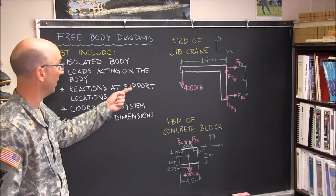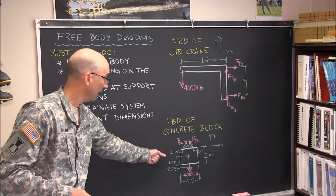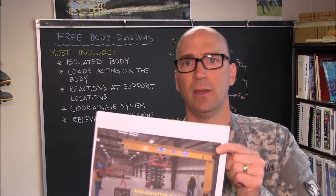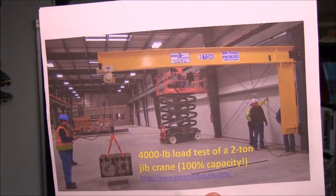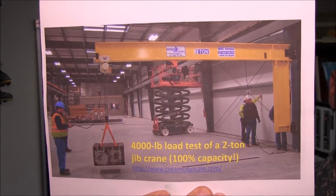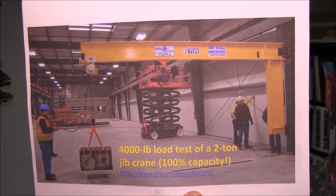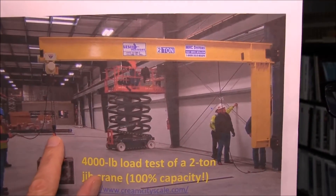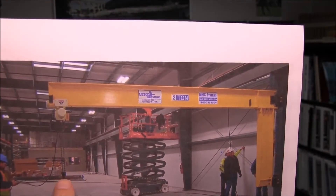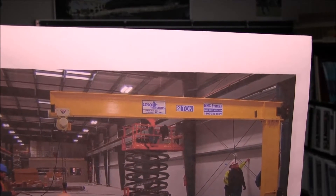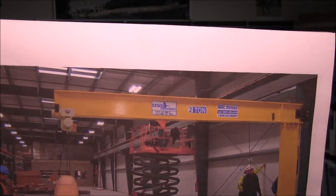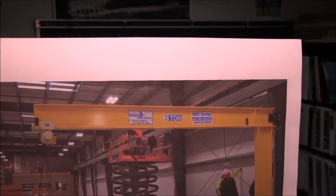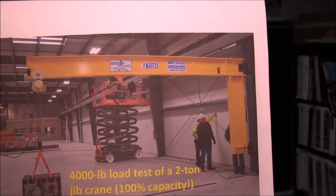So we've now got a free body diagram of the jib crane that we worked on earlier, and now of the concrete block. Coming back to the image one more time — are there any other bodies of interest that we may want to draw a free body diagram of, just to confirm that everything is going to be okay when it comes to capacity? What about this little hook right there? That little hook may be of interest. We can see we've got the cables or straps hanging down pulling down on this hook, and then we've got two chains coming out of this little assembly — some sort of pulley is probably in there. So we've got the straps and we've got the two chains. Let's quickly draw a free body diagram of that hook.